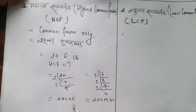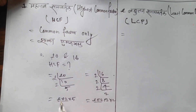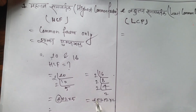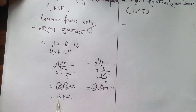So the common factor between 20 and 16 — 20 is 2 × 2 × 5, and 16 is 2 × 2 × 2 × 2. The common factors are 2 and 2, giving us 2 × 2 = 4. So the HCF answer is 4.